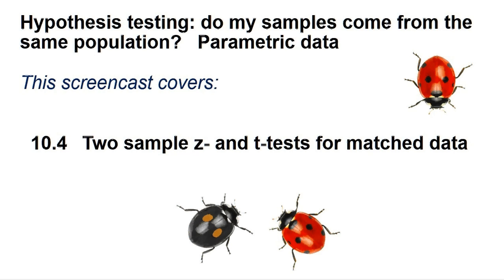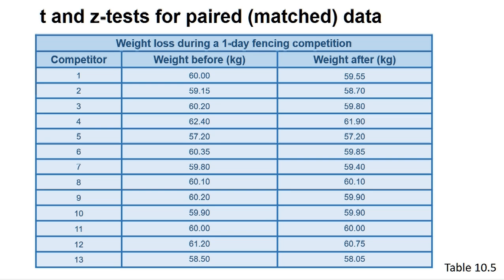Often in the Biosciences we measure an aspect of the same individual organism or object before and after the application of a treatment, with the purpose of understanding whether that treatment causes a change in the measured attribute. For instance, in the example detailed in section 10.4 of the book, we look at weight loss due to competing in a one-day fencing competition by measuring the weight of individuals before and after competing. Such data is called matched or paired data and is useful since it minimises the number of confounding variables that would be present if we measured a different set of individuals before and after the competition.